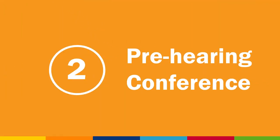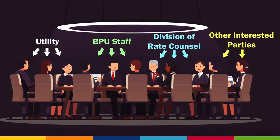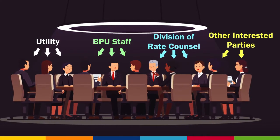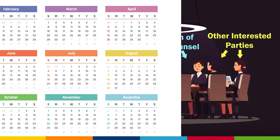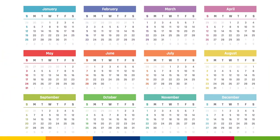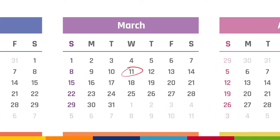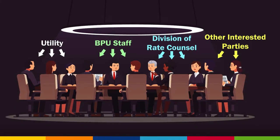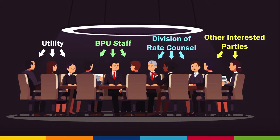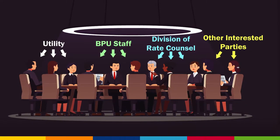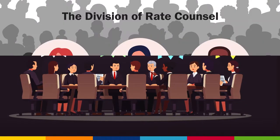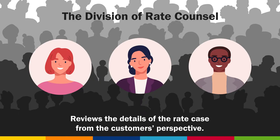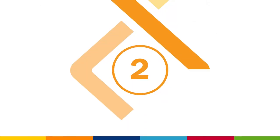Step 2 – The Pre-Hearing Conference. Shortly after the rate case is filed, a pre-hearing conference is generally held to establish a procedural schedule, including filing and hearing dates. The utility, BPU staff, Division of Rate Council, and other interested parties participate. The Division of Rate Council is the body who reviews the details of the rate case from the customer's perspective.